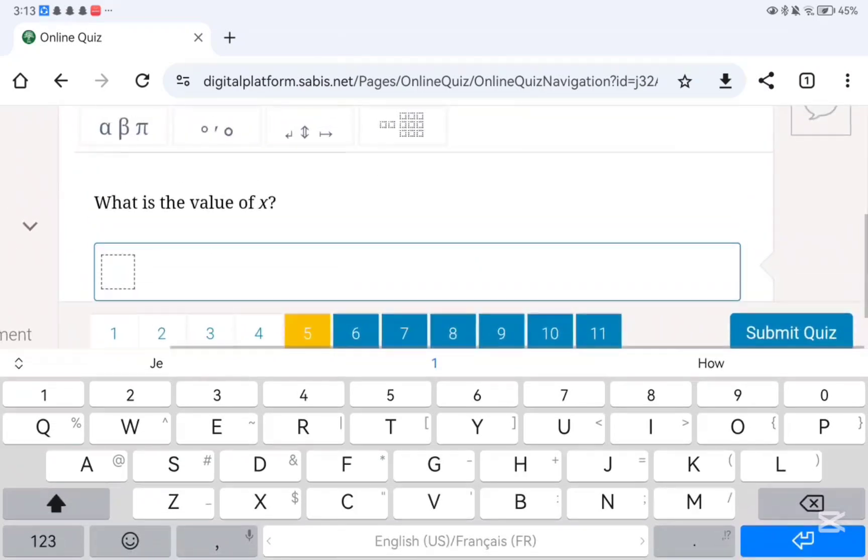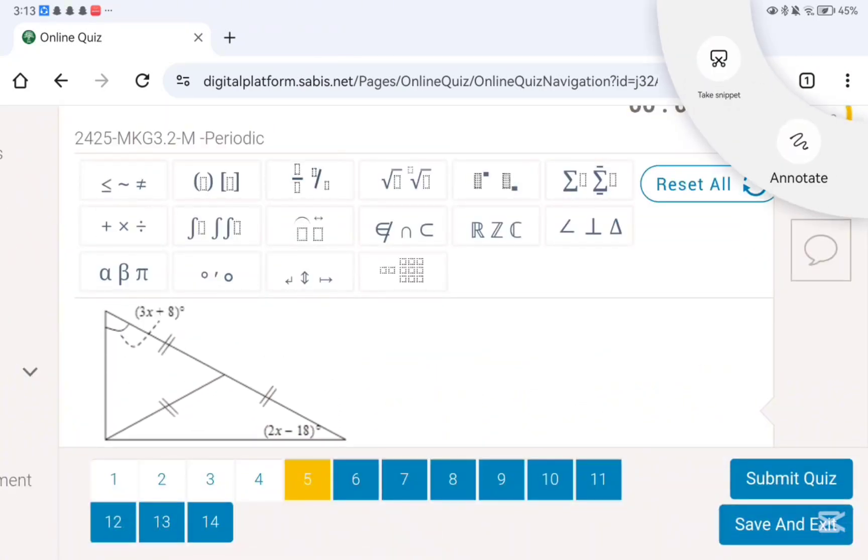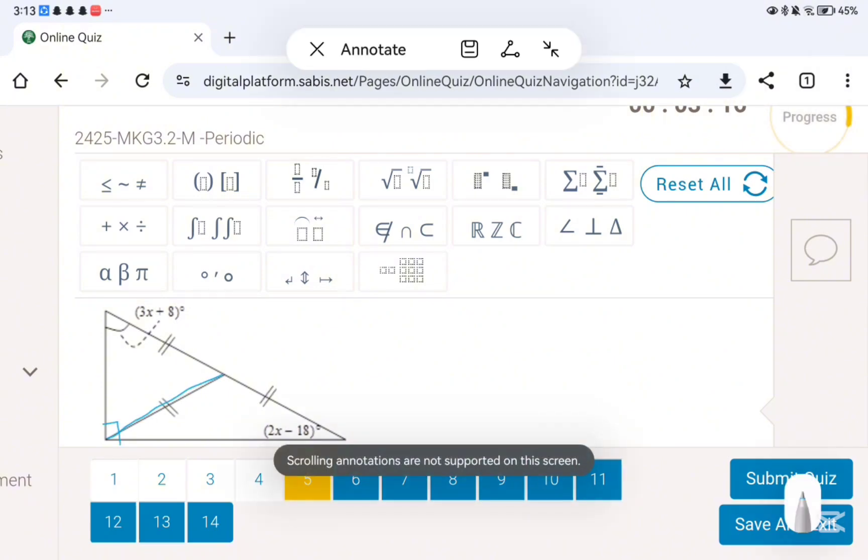Here it's very easy. Okay, here you add both of the equations. So it's going to become 5x minus 10 equals 290. Then you move over 10 to the other side, you'll get 5x equals 100 and then x equals 20.